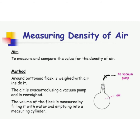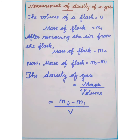For measurement of density of a gas: first find the volume of the flask, equal to V, and the mass of the flask, equal to M1. Then remove the air from the flask using a vacuum pump and measure the mass again, now mass of flask equals M2. The density of the gas is equal to mass divided by volume, which is M2 minus M1 divided by V.